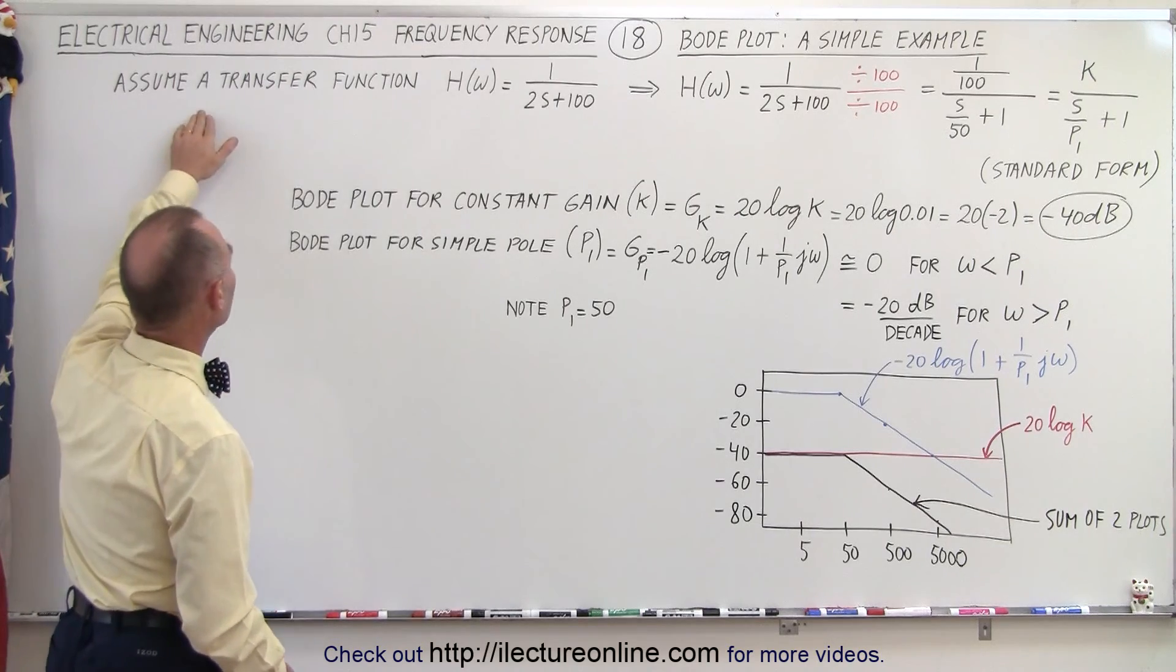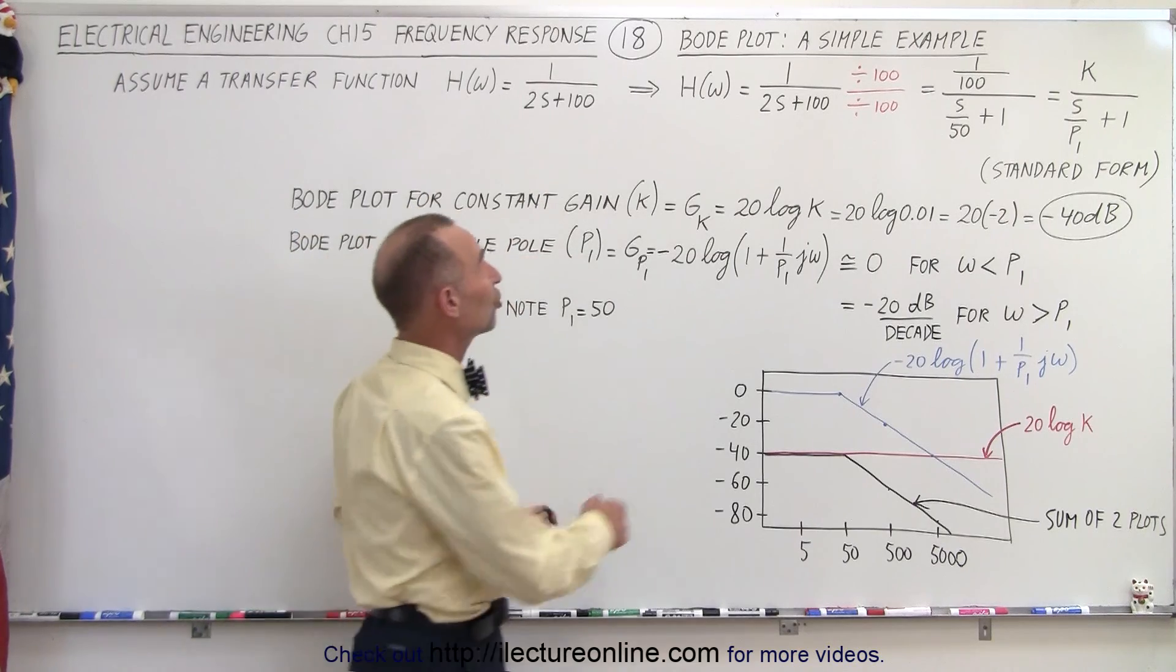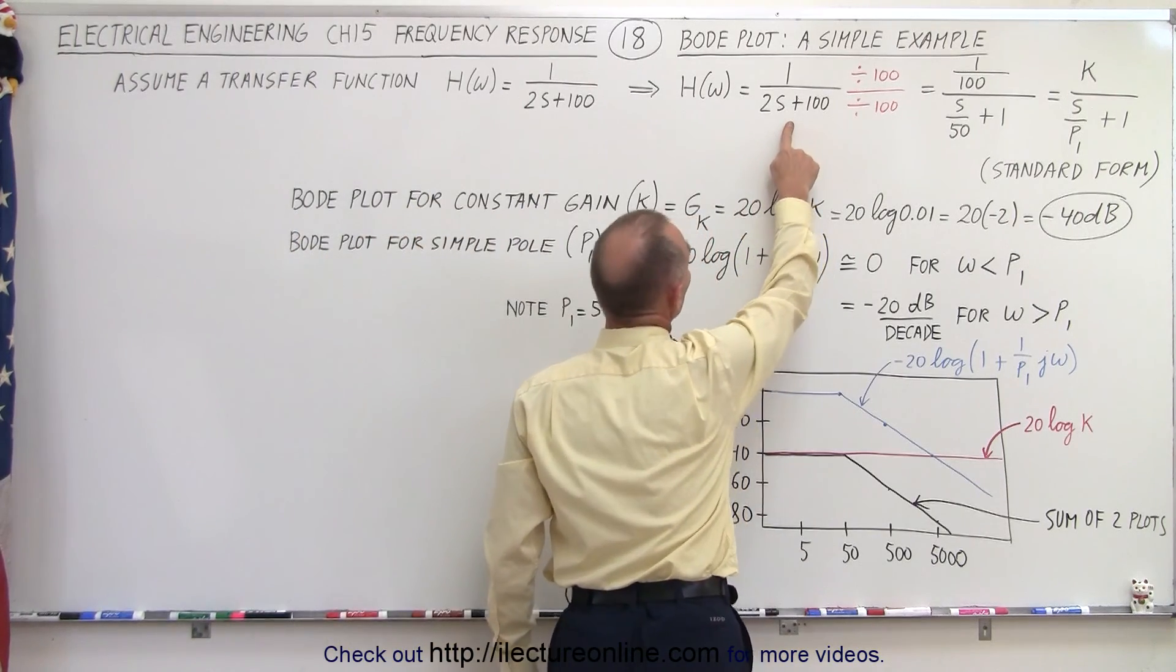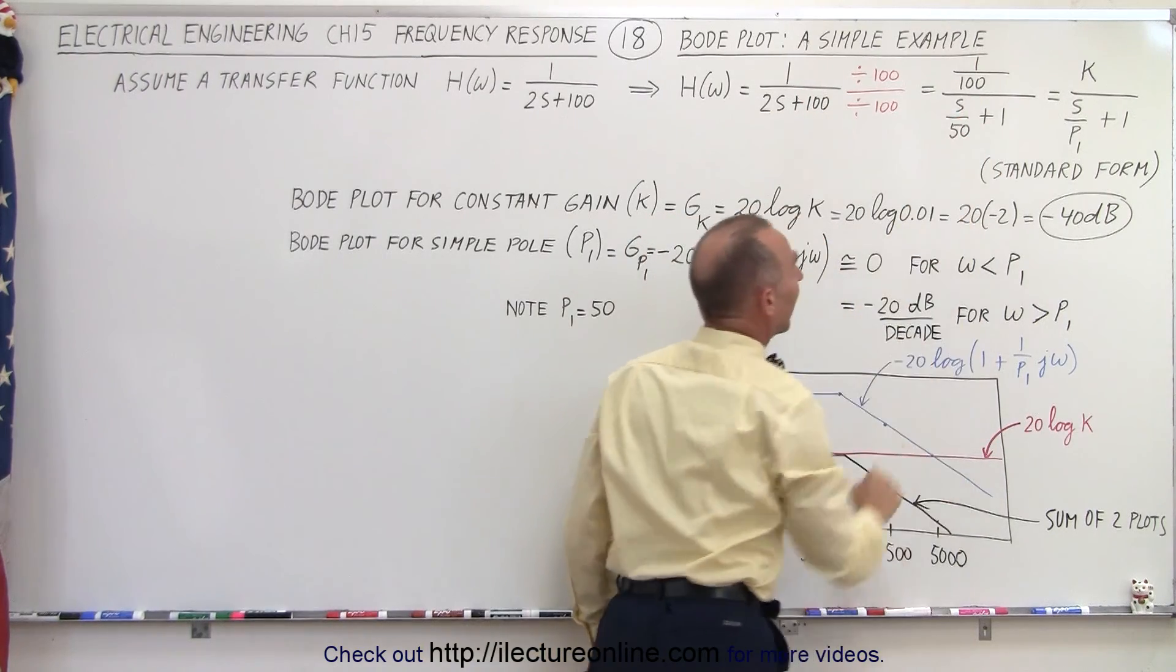Let's say that we start out with a transfer function that looks like this. Now what we're going to do with this function is change it somewhat. We're going to change it by dividing both the numerator and the denominator by 100 to make it look like that.